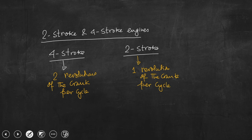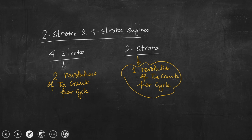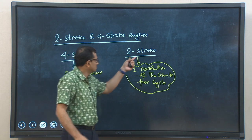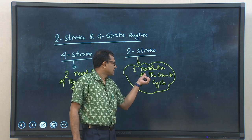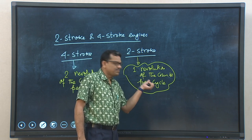For both SI and CI engines, if the engine is a four-stroke cycle engine, there are two revolutions of the crank per cycle. For the two-stroke engine, there is one revolution of the crank per cycle, and there is one power stroke per revolution and one revolution per cycle.